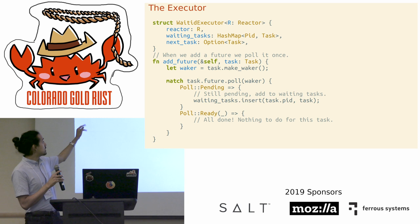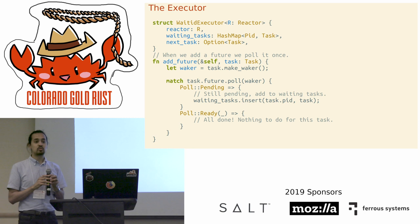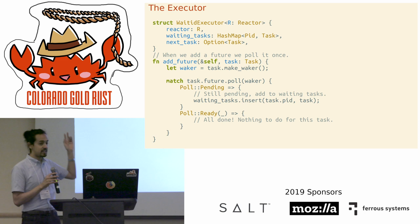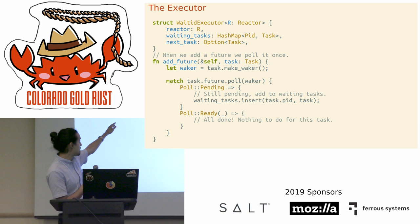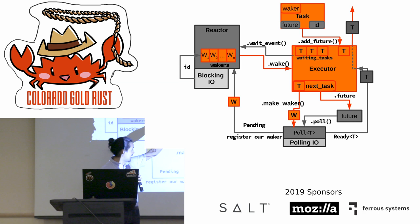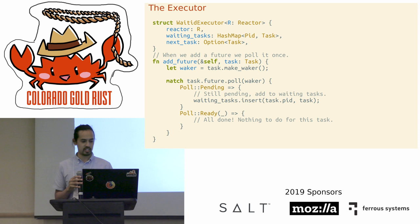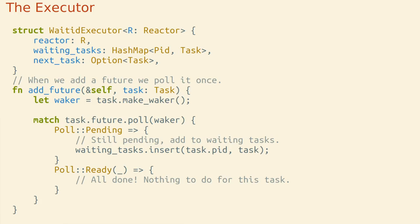The executor is parameterized by a generic R where R implements Reactor, allowing any reactor as long as it agrees on the simple Reactor interface. The executor holds a HashMap from PIDs to tasks as waiting_tasks, and a single Option<Task> called next_task. The executor also holds a handle to the reactor.